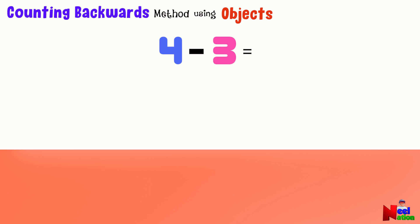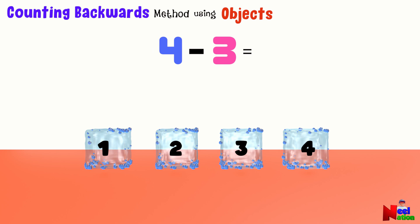So which number do we start with? 4. That's right. Let's imagine we have 4 ice cubes. Let's figure out how many are left if 3 ice cubes melt away. We are going to count backwards as the ice cubes disappear. Ready? We start with 4 ice cubes.